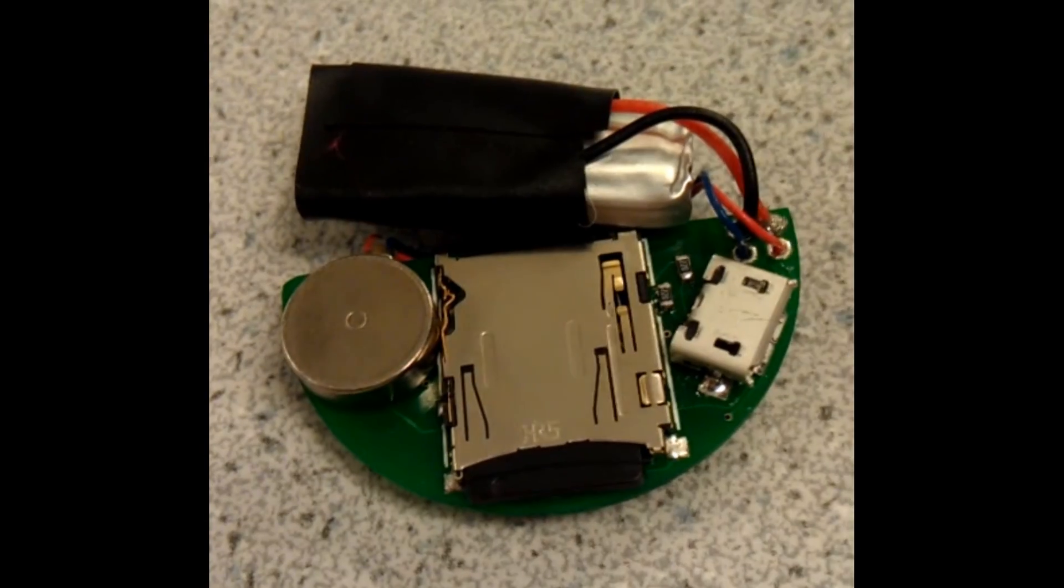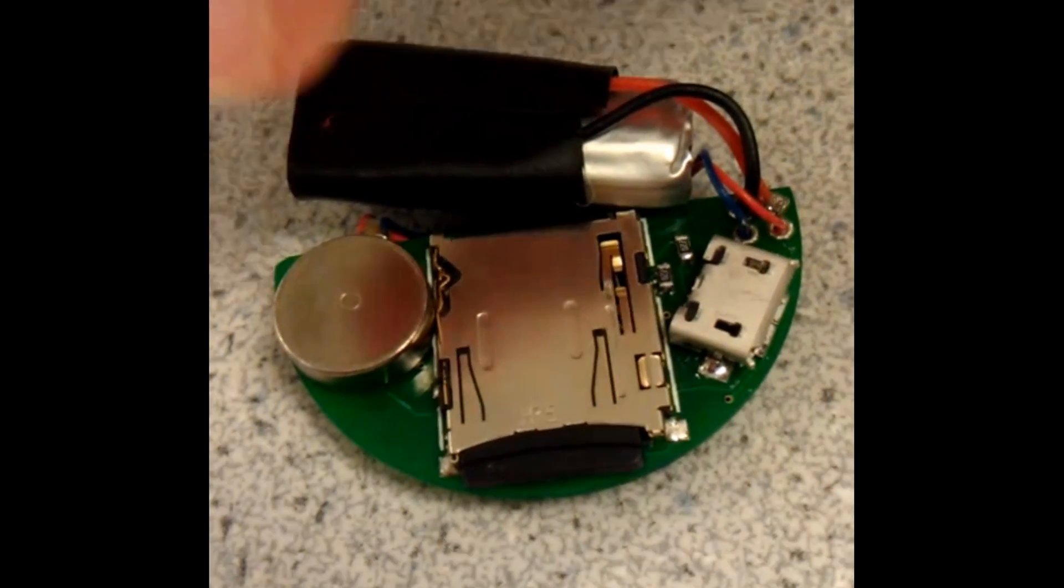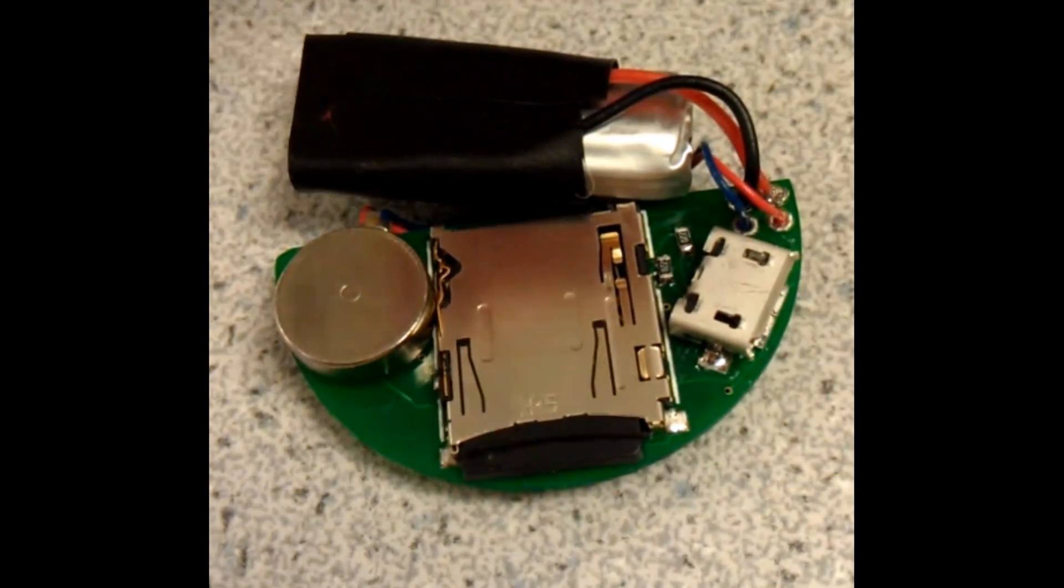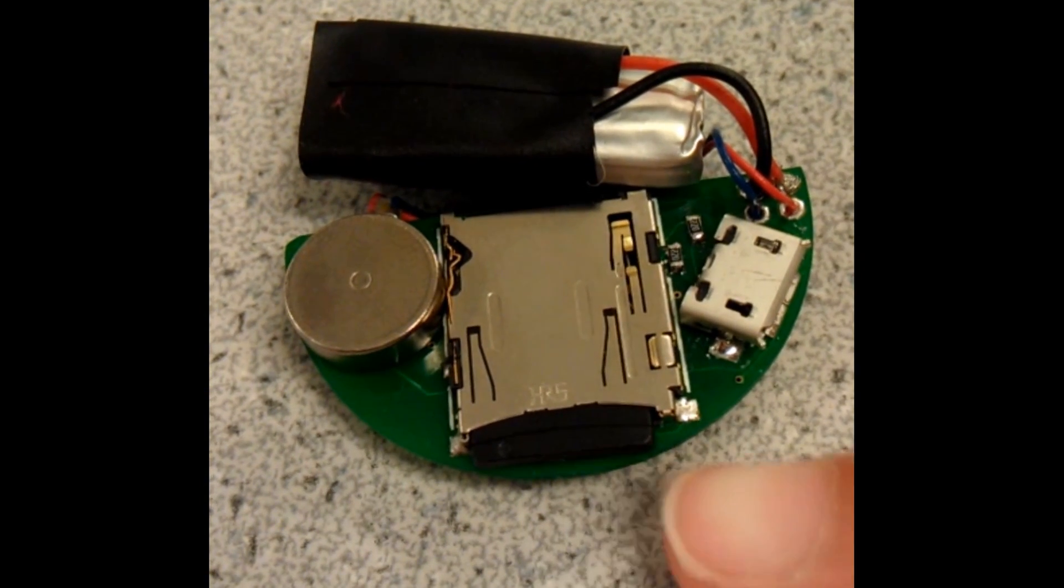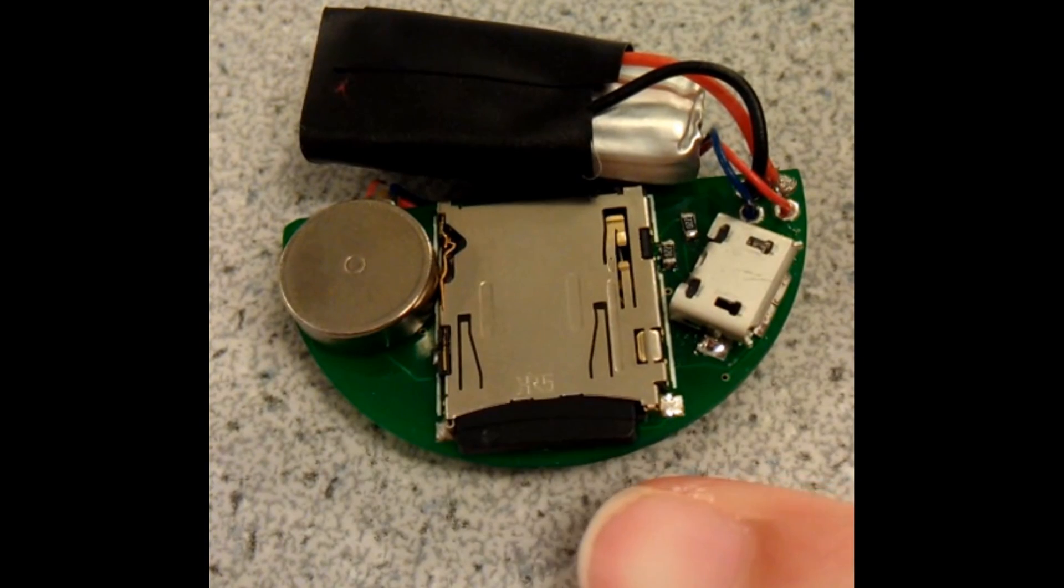So can you take it apart now? Sure. So here's the backboard. We have the vibration motor here that will alert the user when they have forgotten to do a time perception measurement. We also have the micro SD card. This is used for recording the time perception measurements.